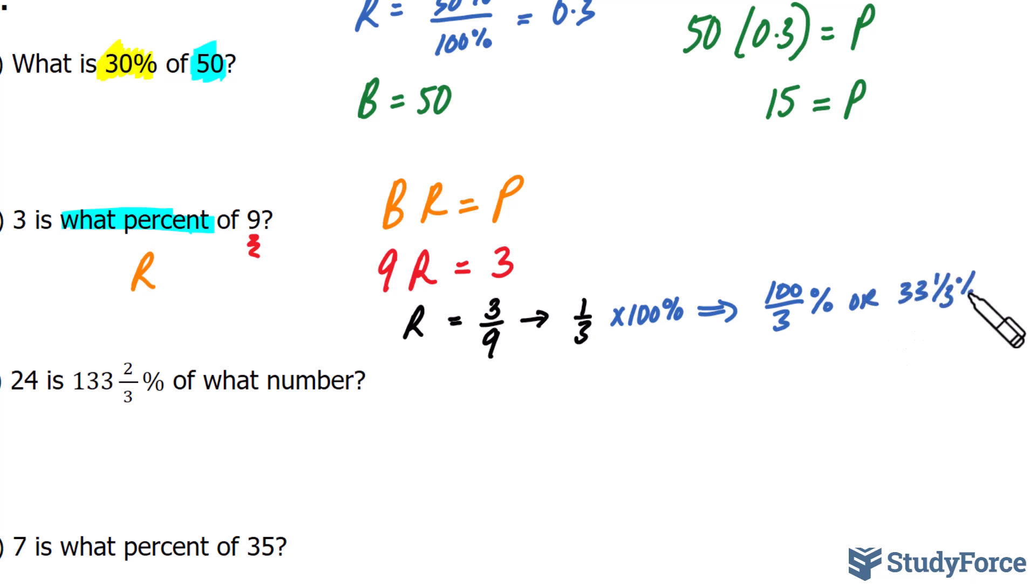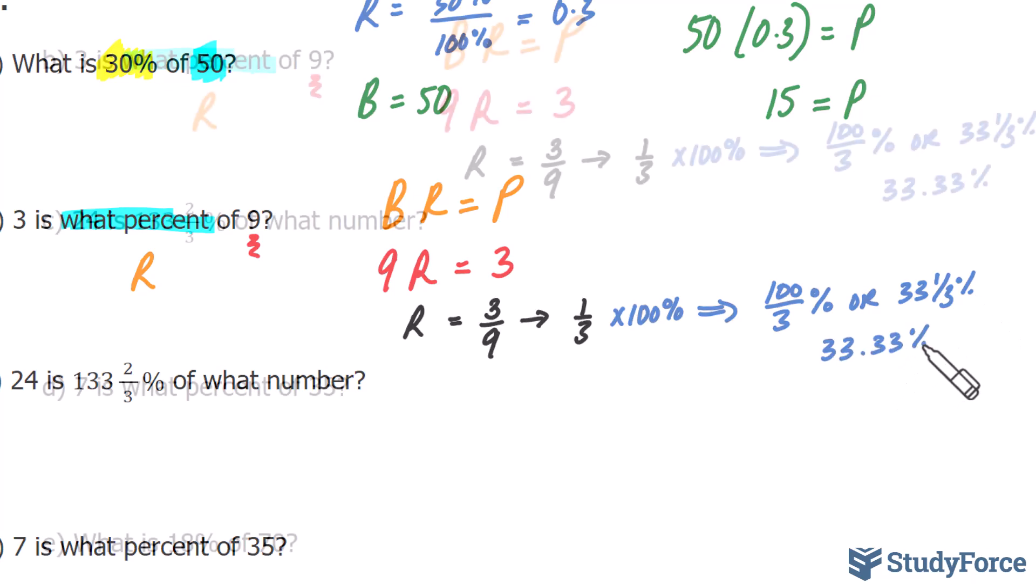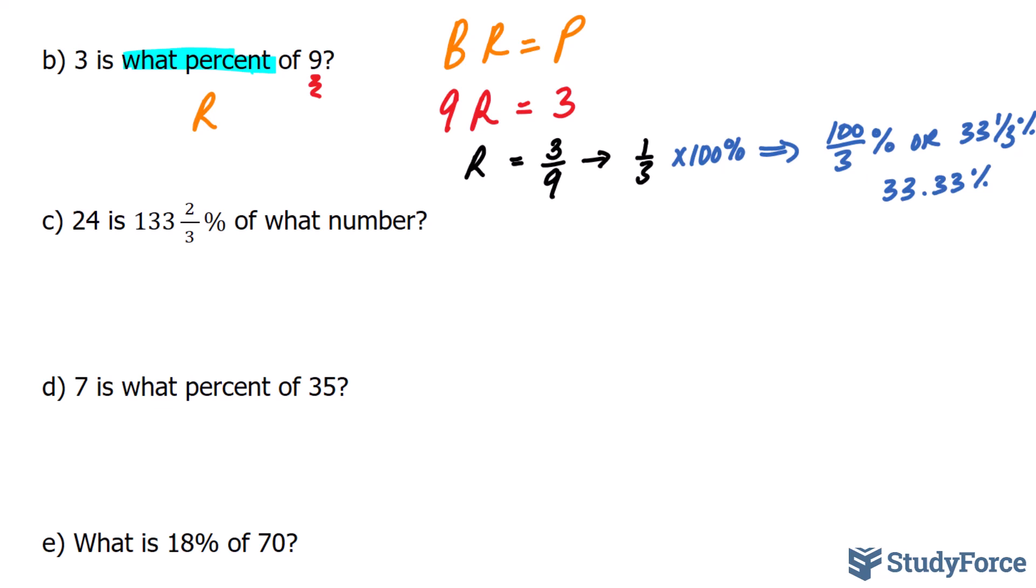You may also write it as a decimal as 33.33%. In question C, it reads, 24 is 133 and two-thirds percent of what number? Notice right away that we have been given a percentage, so that will represent our value of R once we've divided it by 100%. We'll do that in a moment.